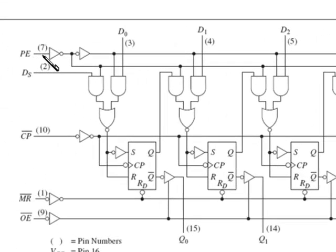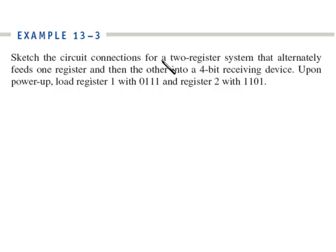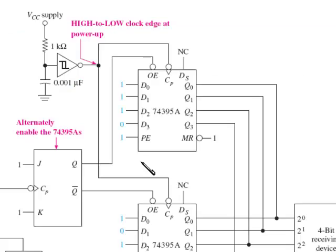And of course, up here you can see how the parallel enable works. If you have a high here, it gets turned into a low, which is really a high over on this side. And that's a strobe input on an AND gate, so the Ds don't go through unless you have a high on the other leg. So here's your parallel enable. To see how this works, let's look at example 13-3, which is an actual circuit using this chip. In example 13-3, we're going to sketch a circuit of connections for a two-register system that alternately feeds one register, then the other, into a 4-bit receiving device. Upon power up, we want to load the first register with the number 7, and in the second register with the 1101, which is a hexadecimal letter D.